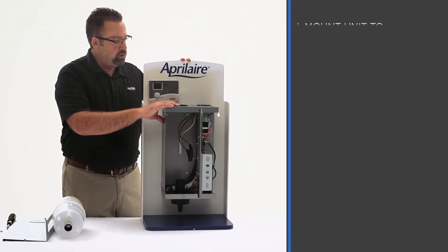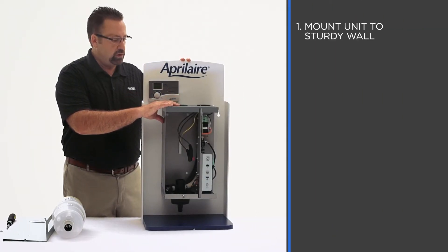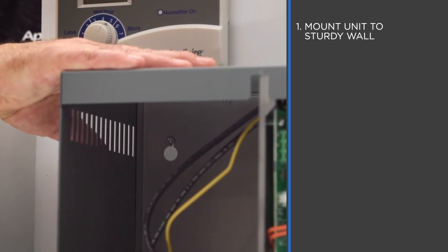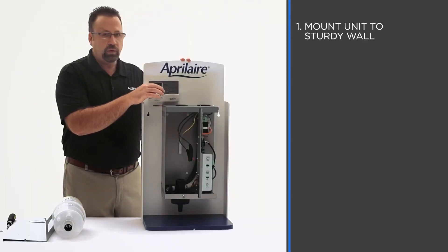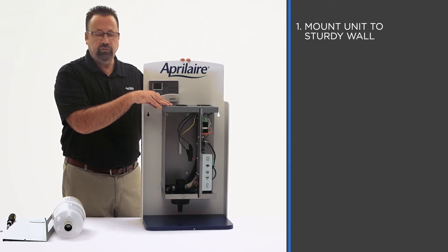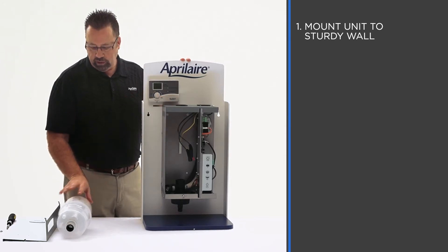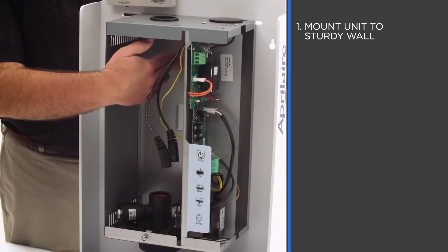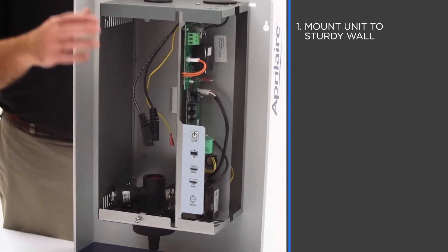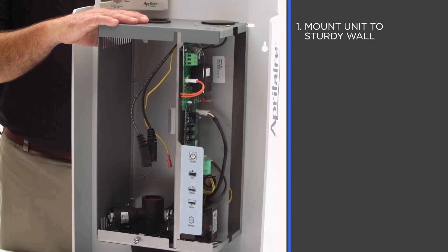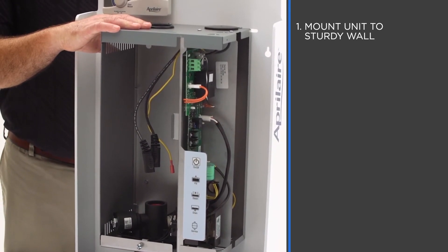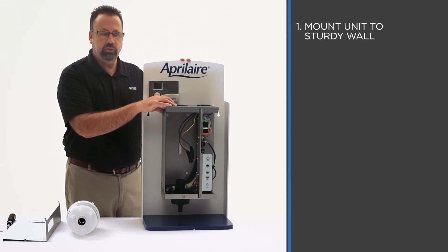When mounting this unit we want to make sure that we're mounting on a good sturdy surface, mounted on a wall preferably. If you can't get to the studs get a spanner board in between. The unit will weigh approximately 30 pounds when it's full of water and when the canister gets near the end of its life. There's two holes at the top, two holes at the bottom for mounting. Make sure the unit is good and level. Duct work mounting is really not recommended. It won't hurt the unit but really is not a preferred method of mounting.